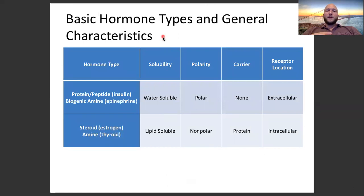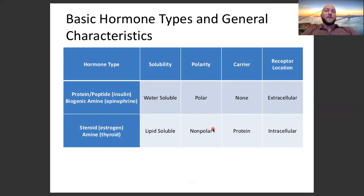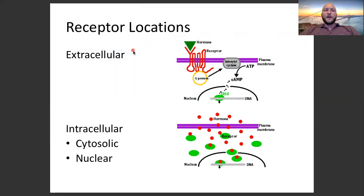A table of common hormones shows two main groups. Protein and protein-like hormones are water-soluble and polar; they don't need a carrier and use extracellular receptors. Steroid and steroid-like hormones are lipid-soluble and nonpolar; because they don't interact well with aqueous blood, they need a protein carrier to move through the bloodstream. Their receptor location is intracellular — in the cytosol or in the nucleus itself.